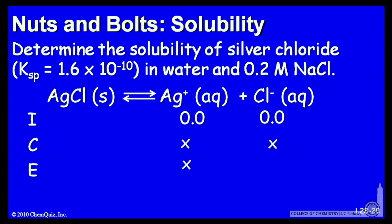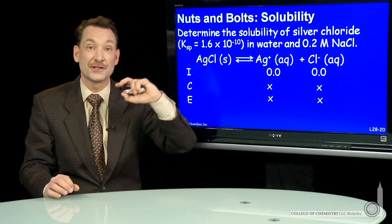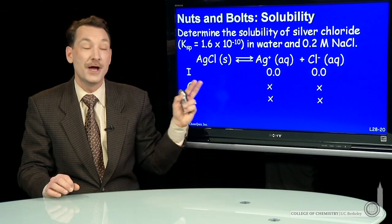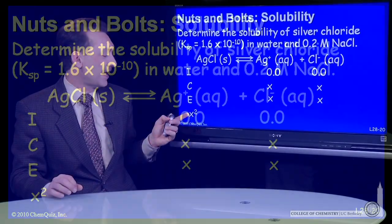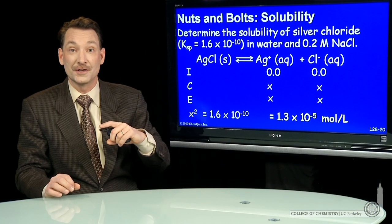And at equilibrium, you would have x molar chloride ions, x molar silver ions. So the solubility product looks like the concentration of silver times the concentration of chlorine. So x times x equals Ksp. I've written that here. x squared is Ksp. So x, the concentration of silver or the concentration of chlorine or the solubility of silver chloride, is 1.3 times 10 to the minus fifth moles per liter. So not a very soluble salt.